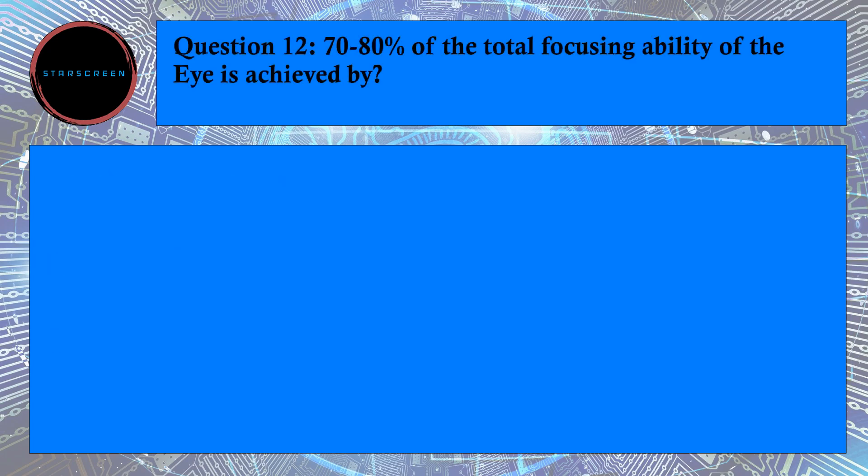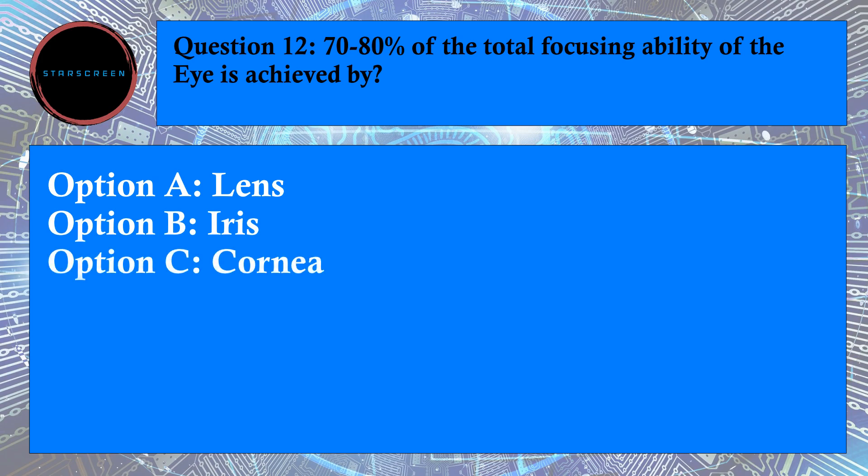Question number 12: 70-80% of the total focusing ability of the eye is achieved by? Option A, Lens, Option B, Iris, and Option C, Cornea. Correct answer is C, Cornea. For answer, refer to CAP715, Chapter 2, Paragraph number 2.2.